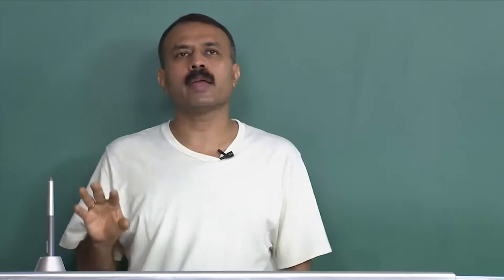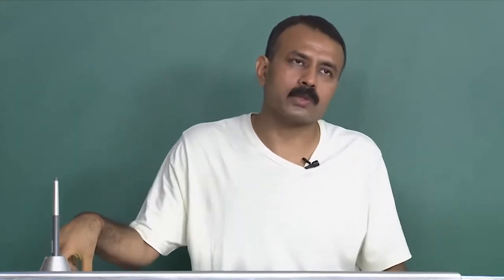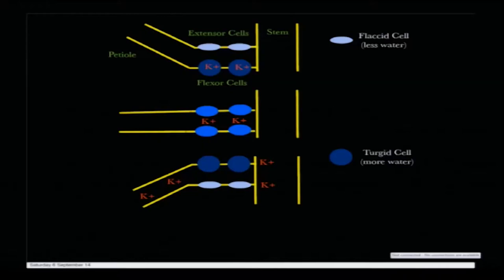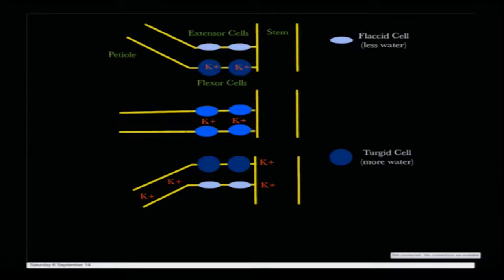The only difference from animal electricity is that most animal electricity leads to an influx of sodium ions, whereas in plants potassium plays a very significant role in regulation. If you could place an electrode between the extensor and flexor cells — there are two kinds of cells here, an extensor cell and a flexor cell — you should be able to record the electrical current being generated by the ionic flux of potassium or any other ions involved.